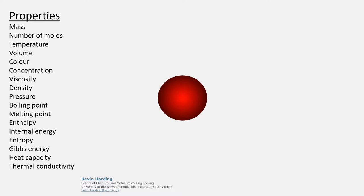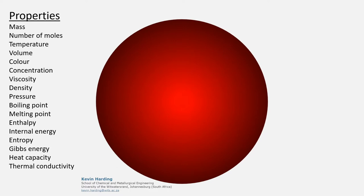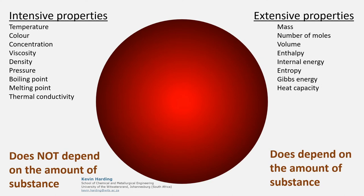But what happens if the amount of substance increases? Will any of the properties already mentioned change? It should be obvious that some of these will change, such as the number of moles, mass, and volume, while others, like colour, temperature, and boiling or melting points, will not be different if there is more substance. The properties that are not affected by the amount of substance are called intensive properties, while those that are affected are called extensive properties.